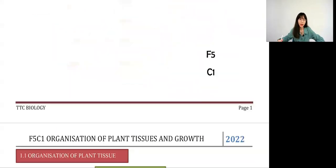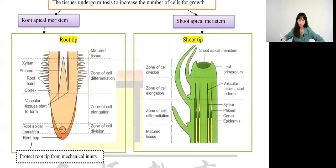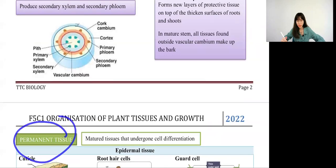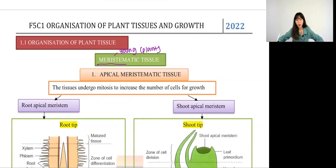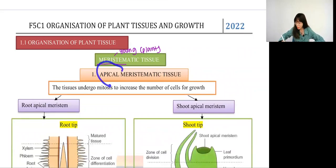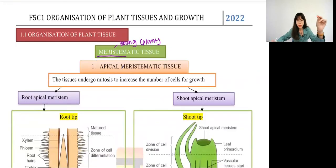For 1.1 we call this the organization of plant tissue. We have two different parts: number one we have meristematic tissue, number two we have permanent tissue. Let's start from meristem. What is the meaning of meristematic? Meristematic means 'young' — it can only be used in plant cells. We call it young plant cells. So this young plant cell has two types: apical meristematic and lateral meristematic.